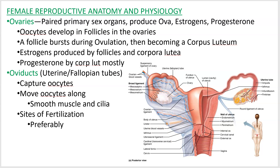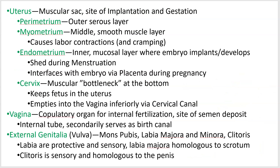The cervical canal empties into the vagina, which is inferior to it. The vagina is actually an internal structure — it's a common misnomer to call the external genitalia of a female the vagina. The vagina is inside. The external genitalia are called either external genitalia or colloquially the vulva. The stuff on the outside includes the mons pubis, which means pubic mountain, and two sets of labia — labia means lips — big lips and small lips, which serve a protective and sensory function.